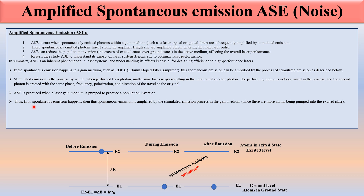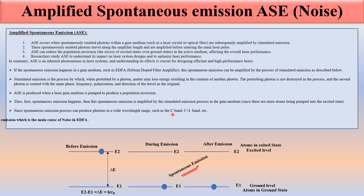First, spontaneous emission happens; then the spontaneous emission is amplified by the stimulated emission process in the gain medium. Since spontaneous emission can produce photons in a wide wavelength range such as the C-band and C-plus-L band, this becomes the main cause of ASE noise. This is all about ASE — thanks for watching.